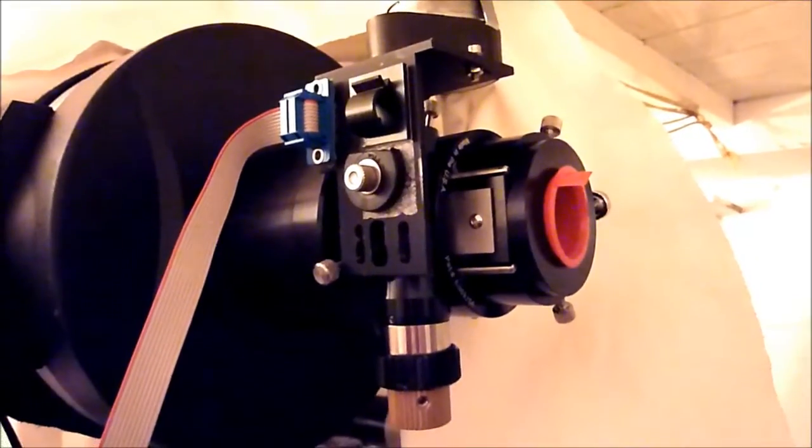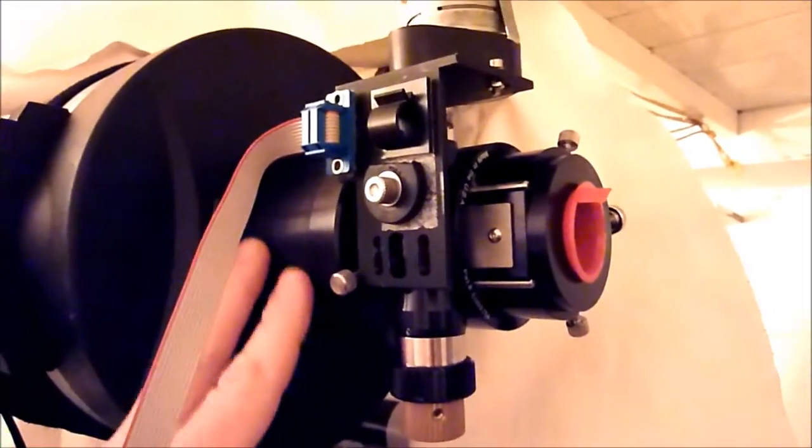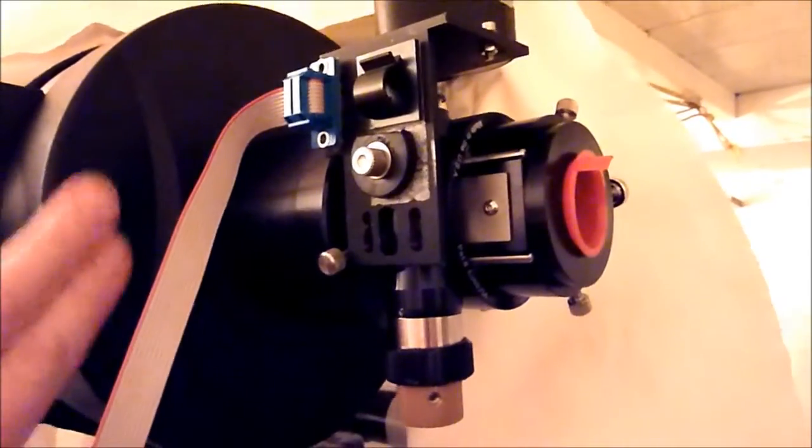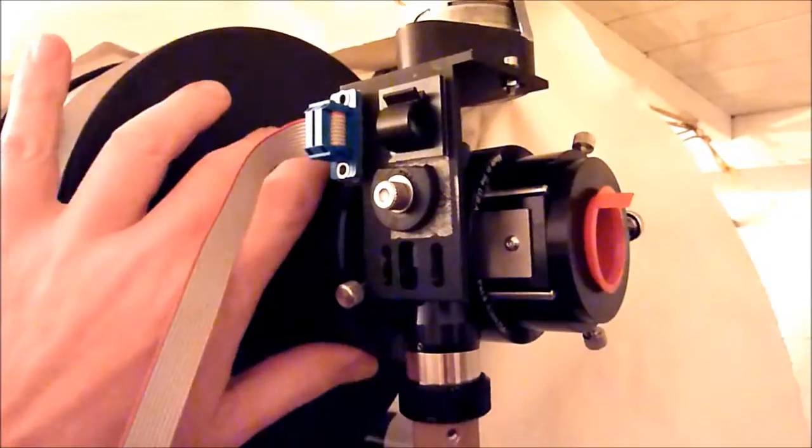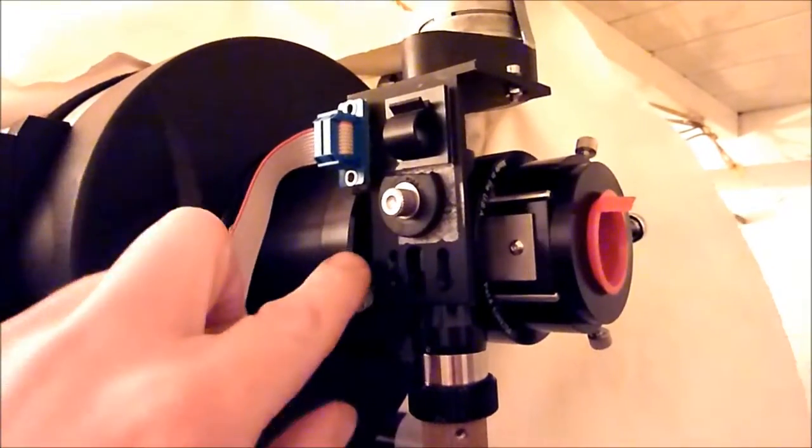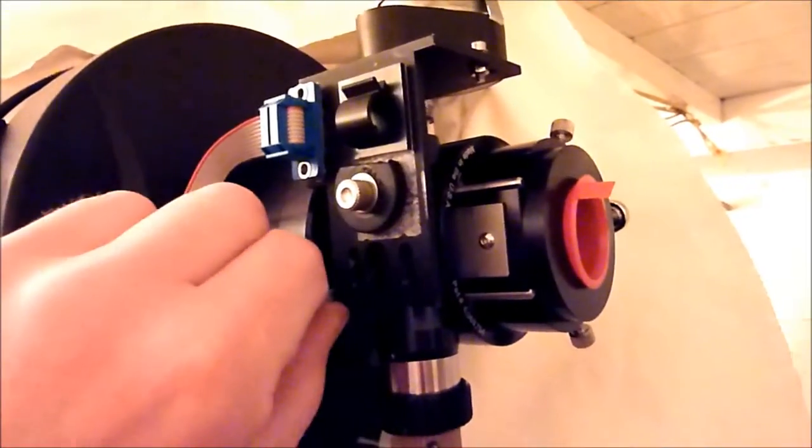Here we are on the back of the scope. I've screwed the adapter onto the back of the extension tube on the back of the scope. I've turned that until it tightened up manually, and then I've rotated the focuser and tightened the three thumb screws.